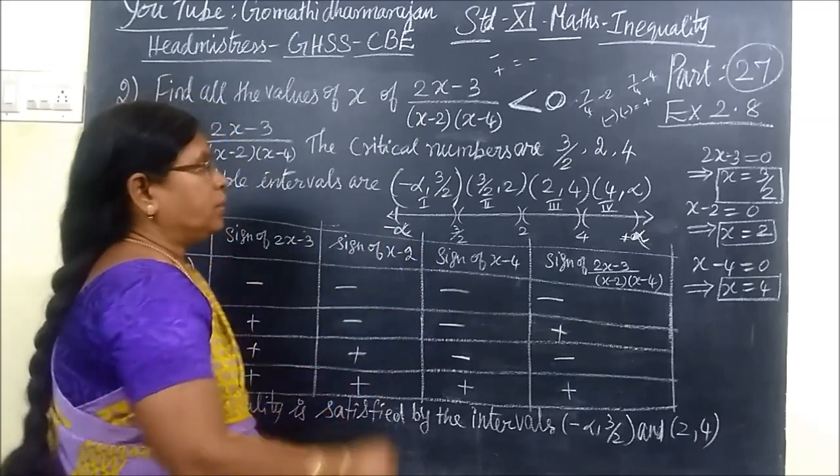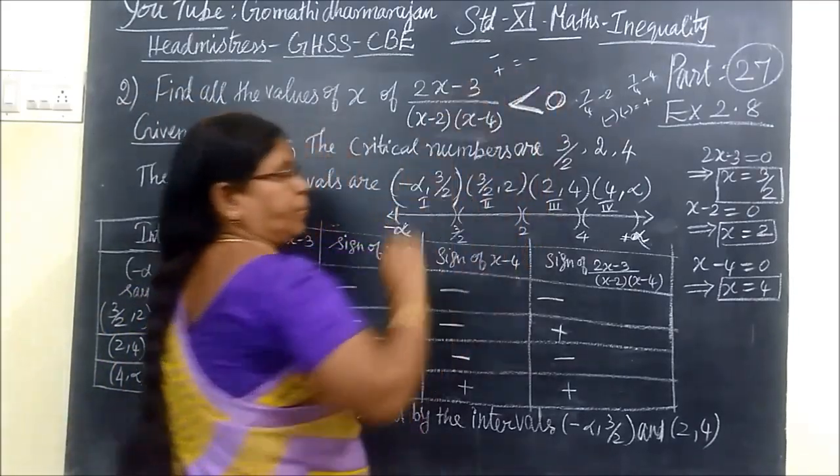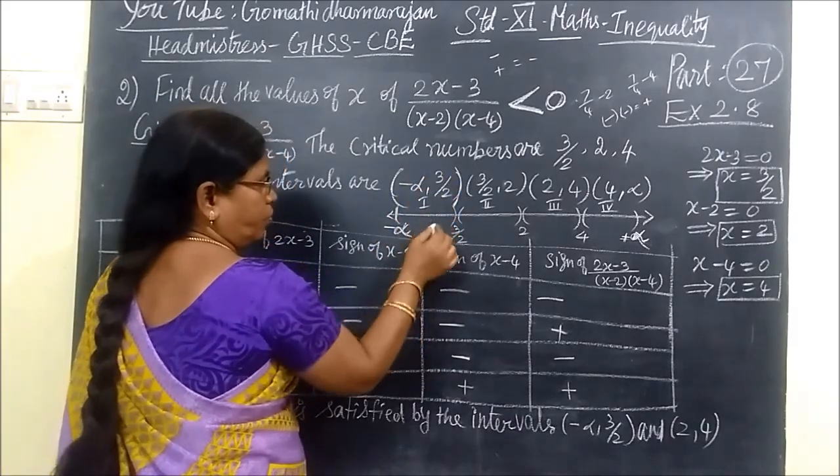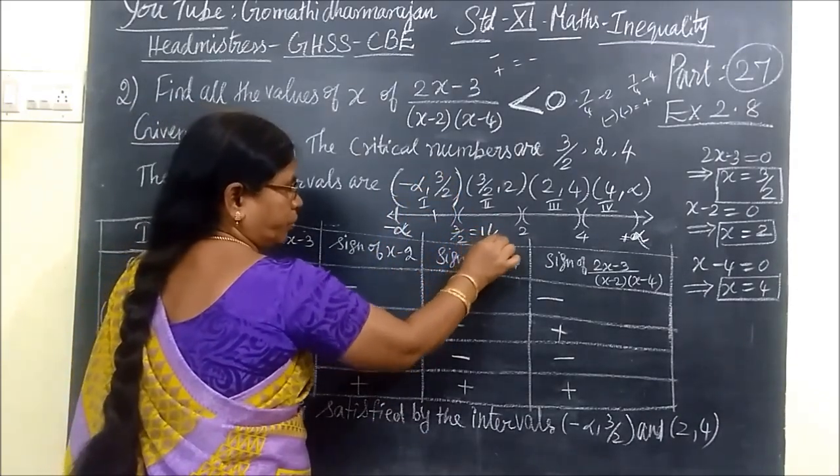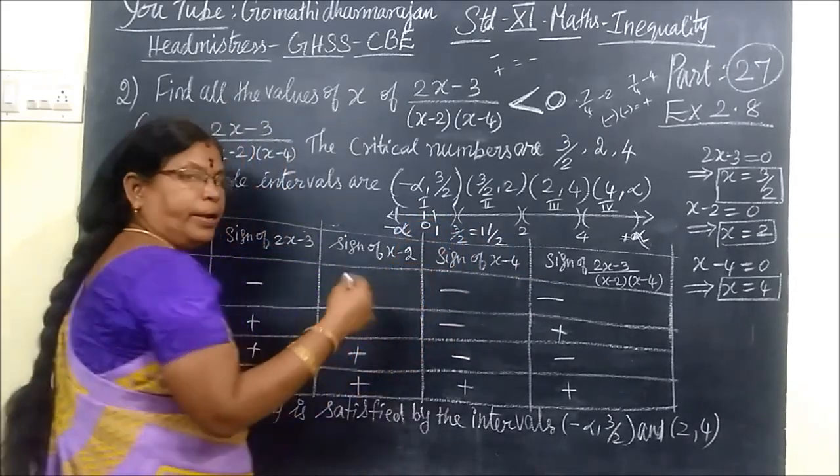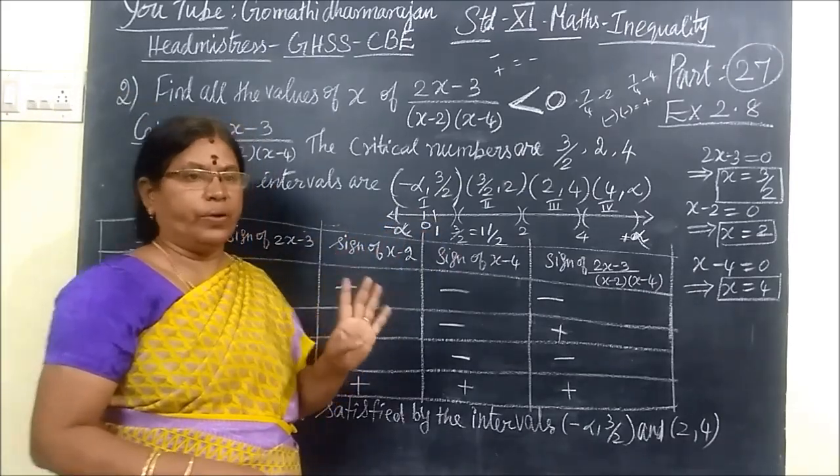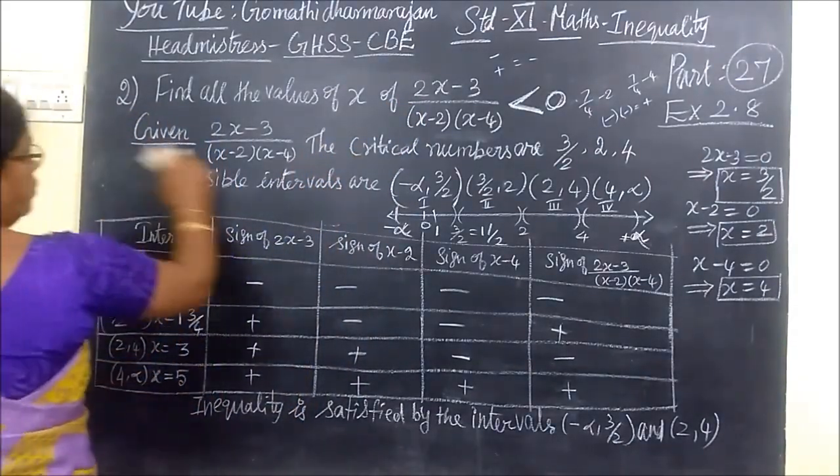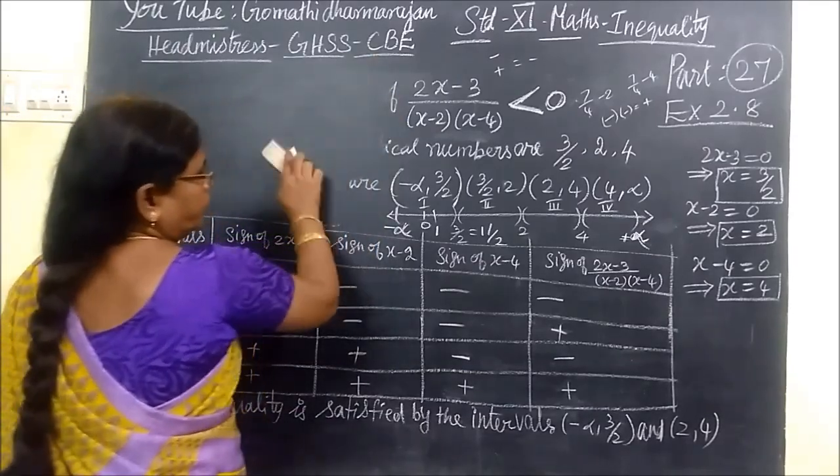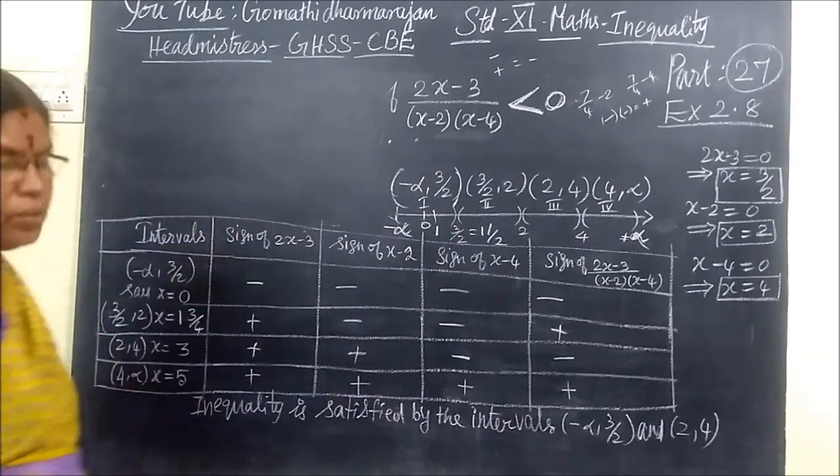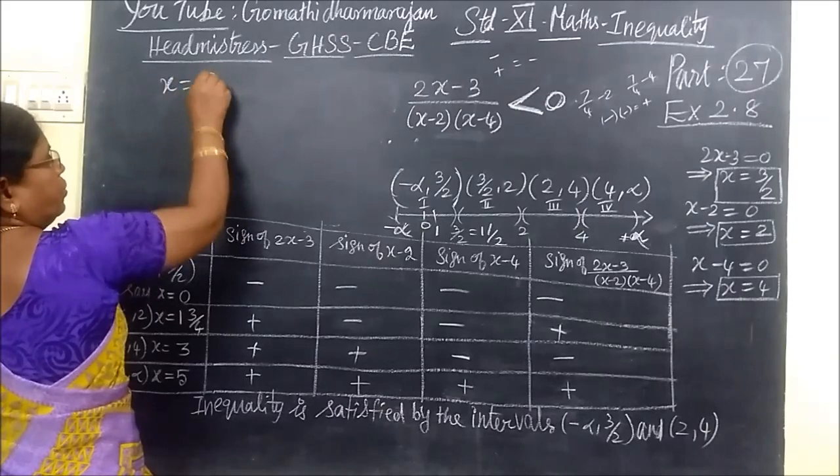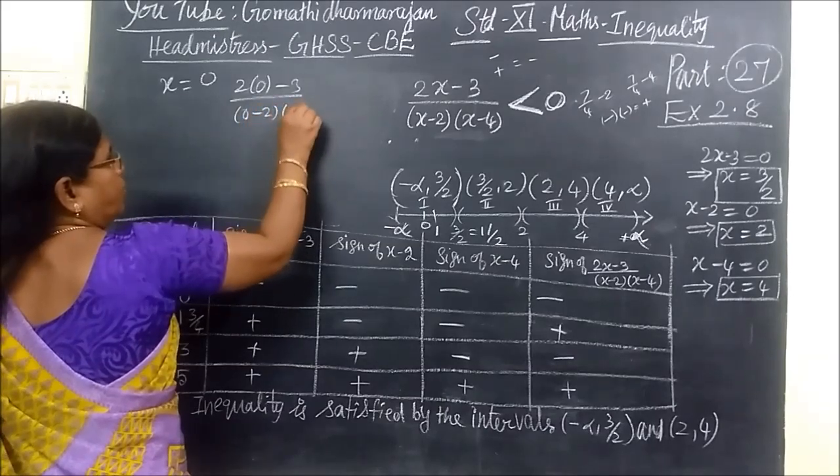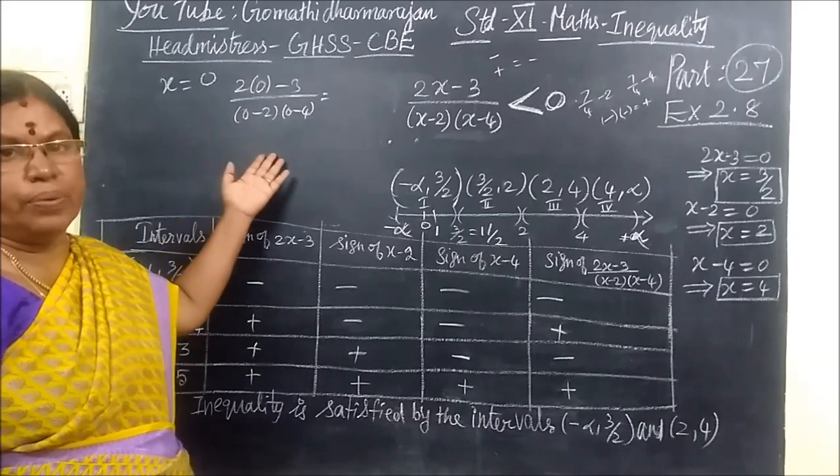From the four intervals, we want to find which interval is satisfied for less than zero. Between minus infinity to 3 by 2, we take any value. 3 by 2 means 1 and a half, so we can take 1 or 0, any value you can take. In the interval, you are taking one value. That value you substitute here.